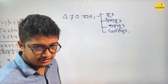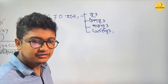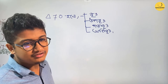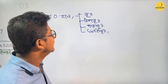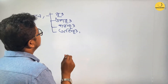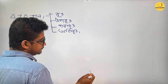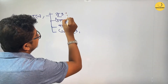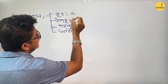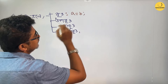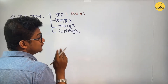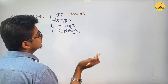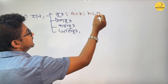The answer is 0. How many times do you have to write? The answer is 0. A is equal to B, and the answer is 0.